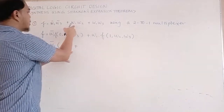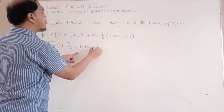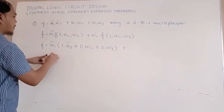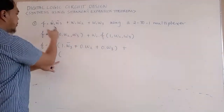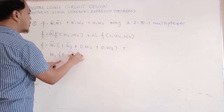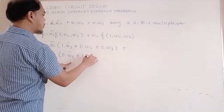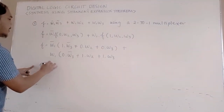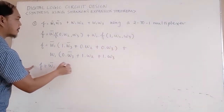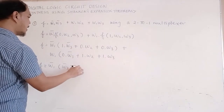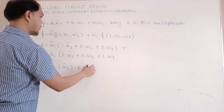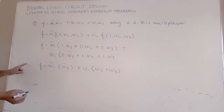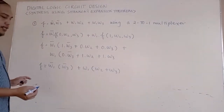The result using Shannon's expansion theorem gives F equals W1-bar times (W3-bar) plus W1 times (W2 plus W3). This is the result using Shannon's expansion theorem, and we proceed to build the resulting circuit.